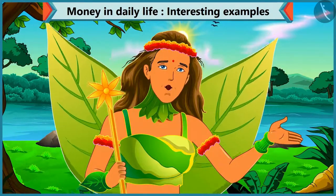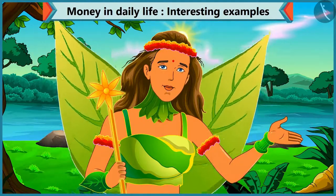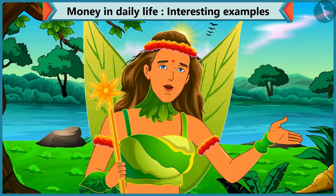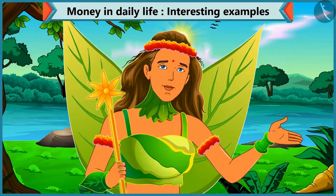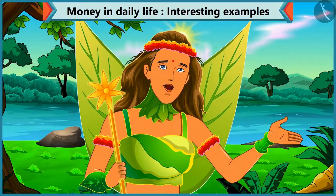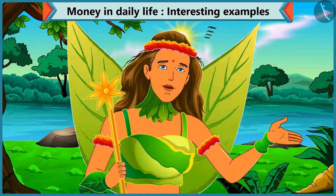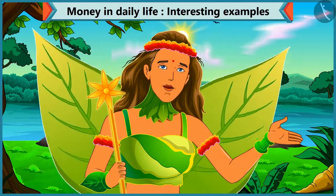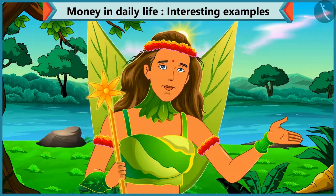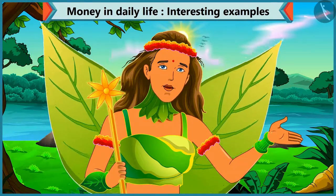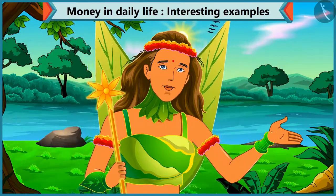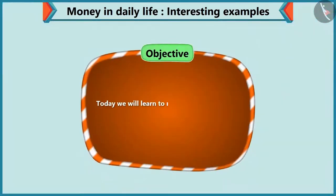Today Choo Choo has to buy a pen for himself. He asks for a 10 rupee loan from Chi Chi. Chi Chi gives Choo Choo different kinds of coins that sum up to 10 rupees. Today we will learn to make an amount by adding different coins in this video.